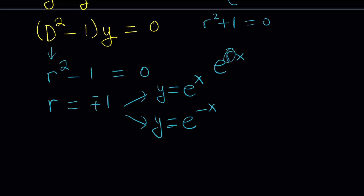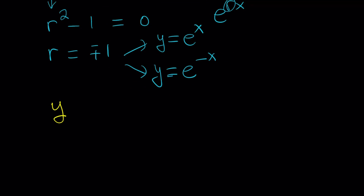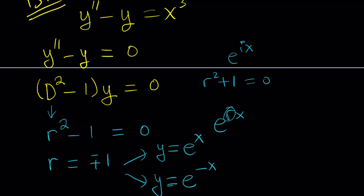Putting these two solutions together as a linear combination gives us y. This is our homogeneous solution: y sub h equals c sub 1 e to the x plus c sub 2 e to the negative x, where c sub 1 and c sub 2 are real coefficients — those are our constants.